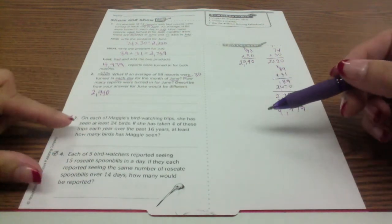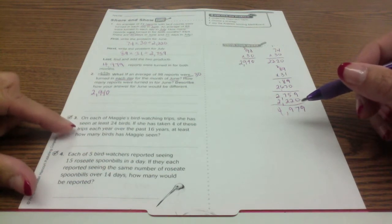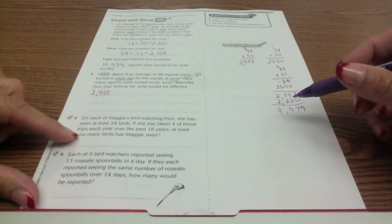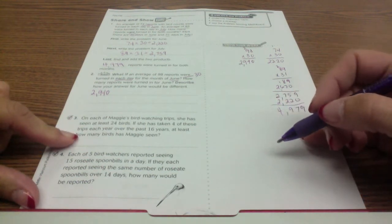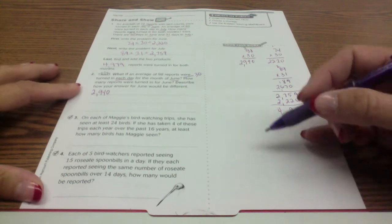On number three, each day of Maggie's bird watching trips she has seen at least 24 birds. If she has taken four of these trips each year over the past 16 years, at least how many birds has Maggie seen? So first I want to think about how many birds she's seen each year.